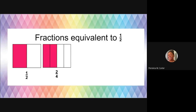Let's start with an equivalent fraction of one half. If we have one piece out of two parts of a whole, that's one half. But we can also take that part that we're focusing on — the pink section — and split that even more and split the other side, so that now we would be focusing on two of the four pieces. So, two fourths.